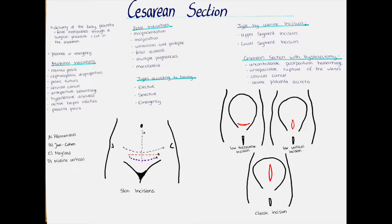Fetal indications include malpresentation and malposition, such as the baby being in breech — so with the feet down instead of the head down — or a variation of the cephalic presentation such as brow, face or chin presentation. Also a prolapse of the umbilical cord or fetal distress before full cervical dilation are indications for a cesarean section.